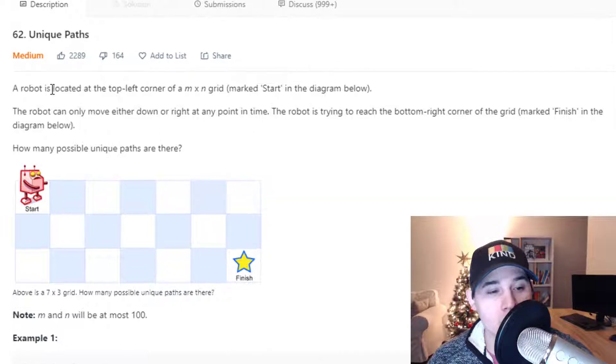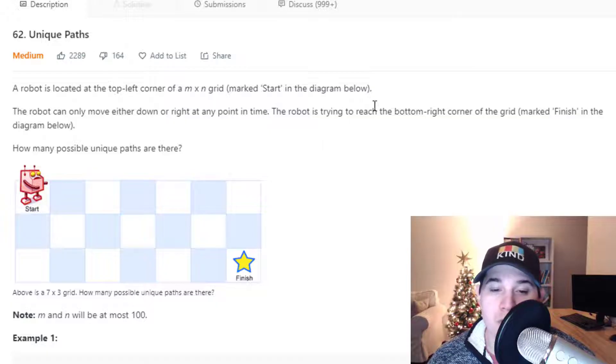So the description says a robot is located at the top left corner of an M by N grid marked start in the diagram below. The robot can only move either down or right at any point in time. The robot is trying to reach the bottom right corner of the grid marked finish in the diagram below. How many possible unique paths are there?